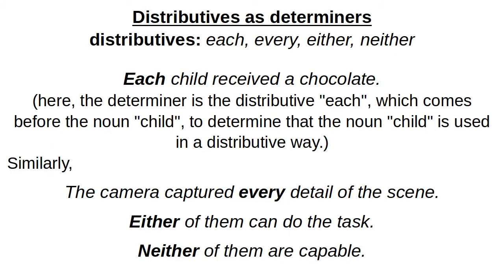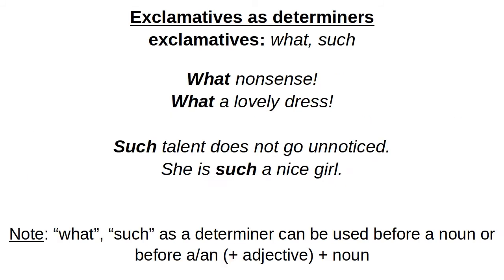We can also use distributives as determiners: each, every, either, neither. For example: 'each child received a chocolate' — 'each' is the determiner, 'child' is the noun, used in a distributive way. 'The camera captured every detail of the scene.' 'Either of them can do the task.' 'Neither of them are capable.'